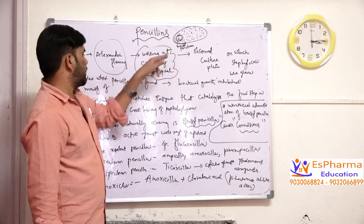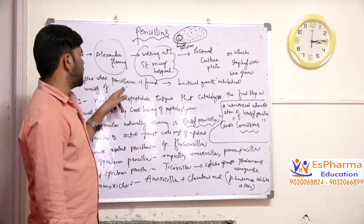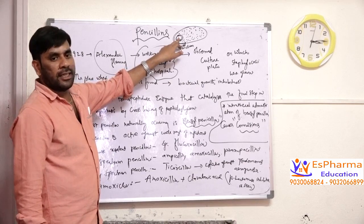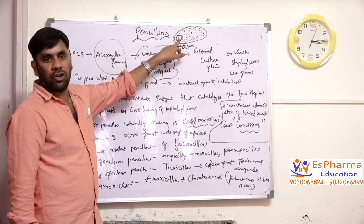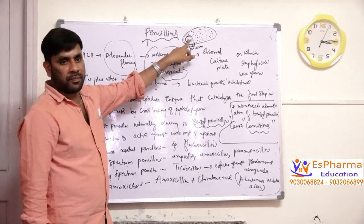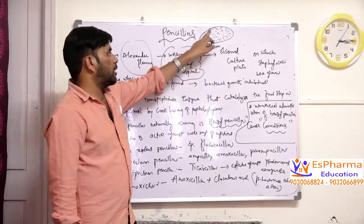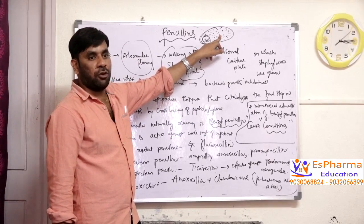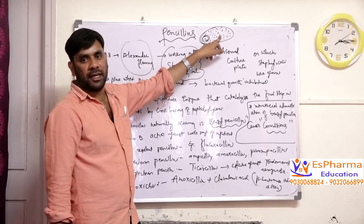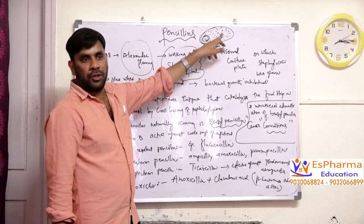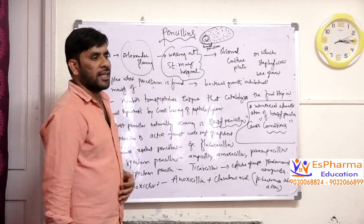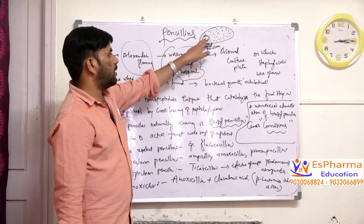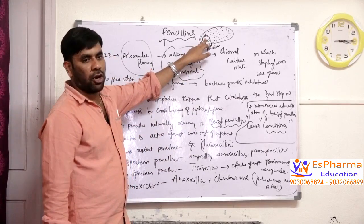In the region where the mould of Penicillium is found, the bacteria has not grown. In other places where the mould of Penicillium is not present, you can find the growth of bacteria. So he was very fascinated — why in this area the bacteria had not grown.